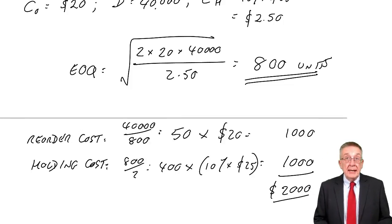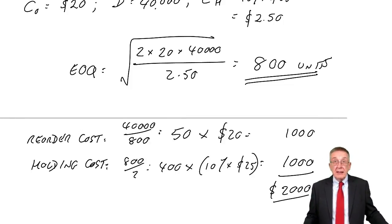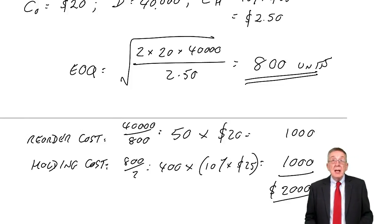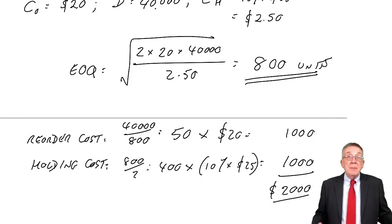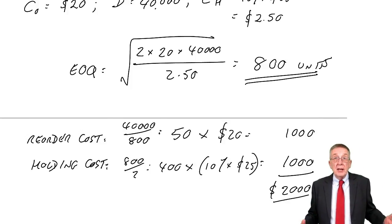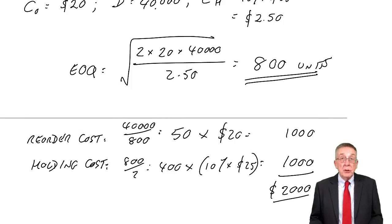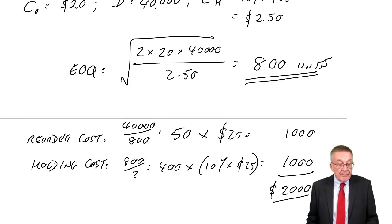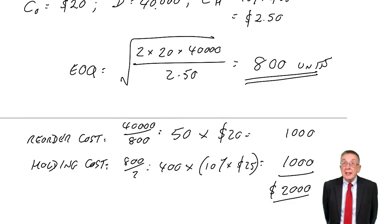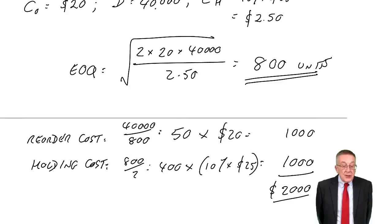We'd ignored how much we were paying for our 40,000 units on the basis that it would be $25 over the year per unit, however many you were ordering each time. However, I did say it could make it a bit more fun with what we call quantity discounts. So look at example three.